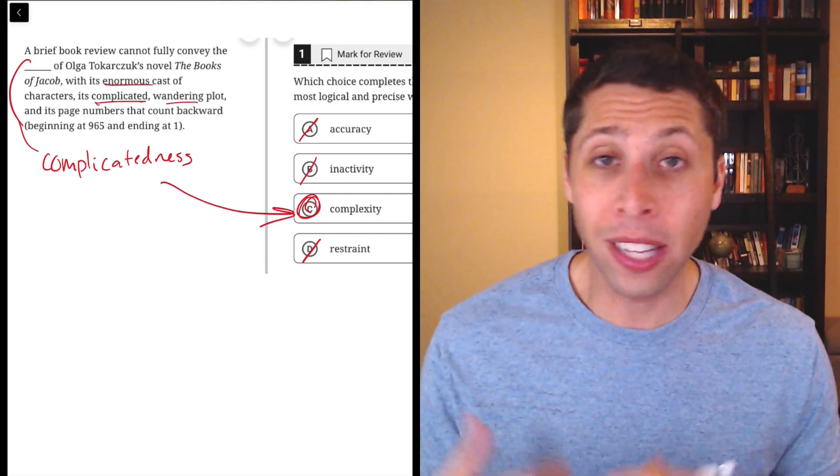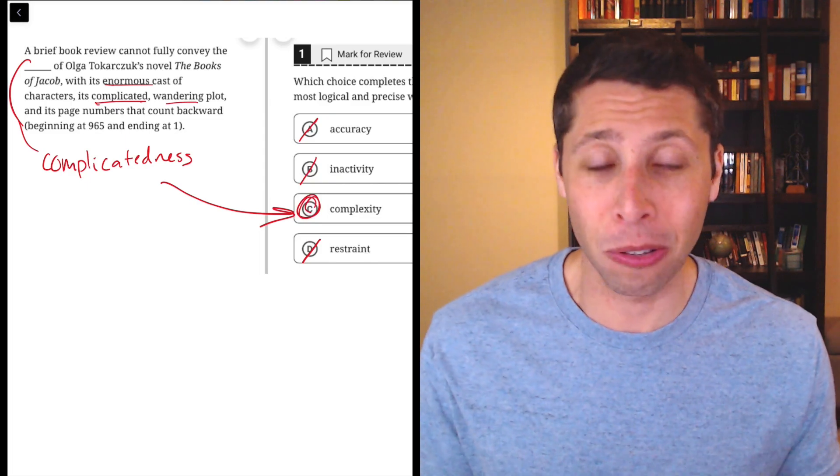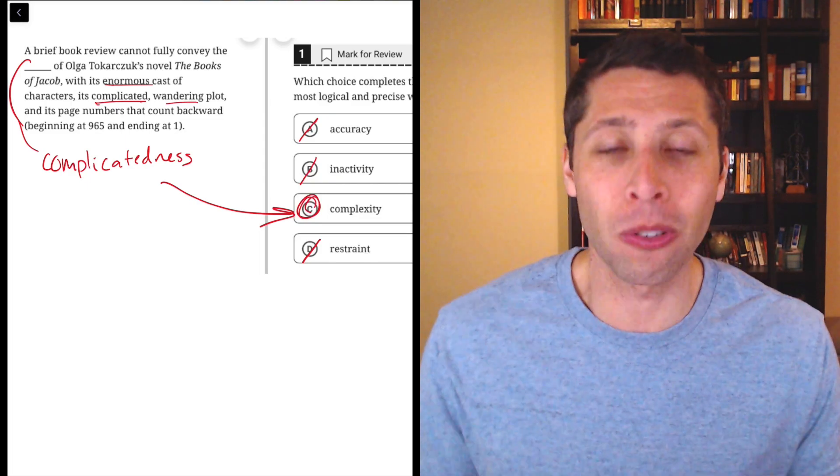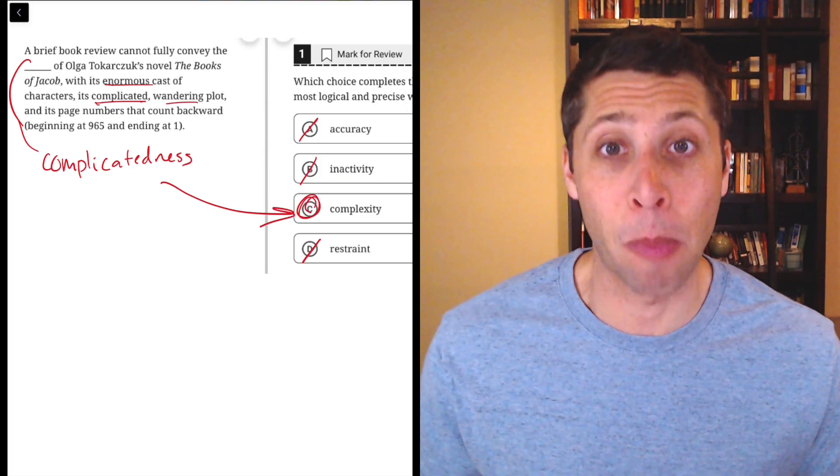So just pick the word that is the smoothest fit and you should be fine. And like I said, they're always gonna leave us little clues to tell us what we need in that blank. So look for those clues and you should be able to find some sort of word in the choices that somehow relates back to those clues.